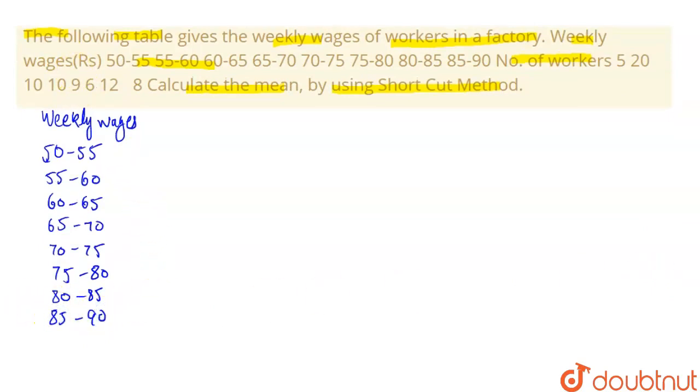And our f column, that is our frequency column, is 5, 20, 10, 10, 9, 6, 12, 8. So now what we'll find is first we'll find x, that is our middle value.